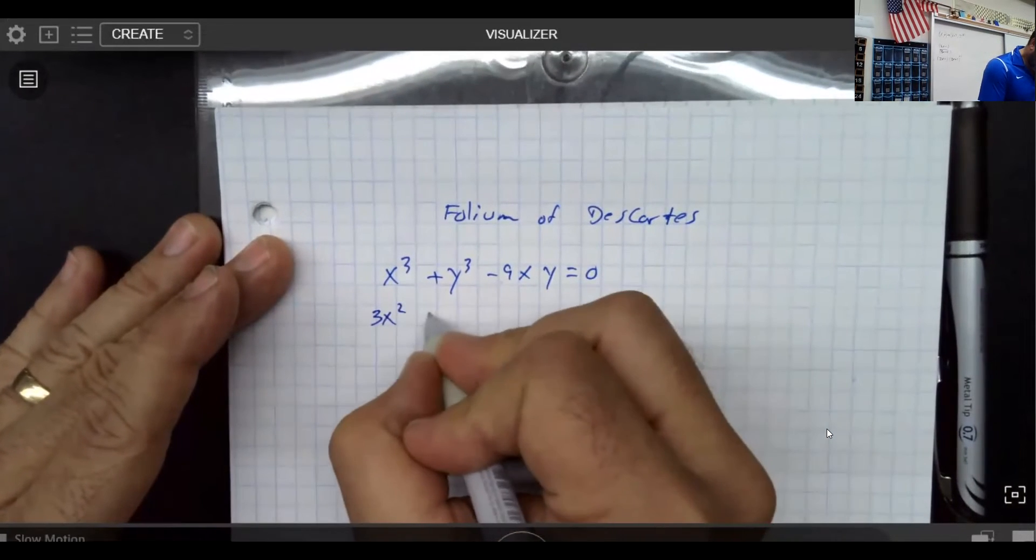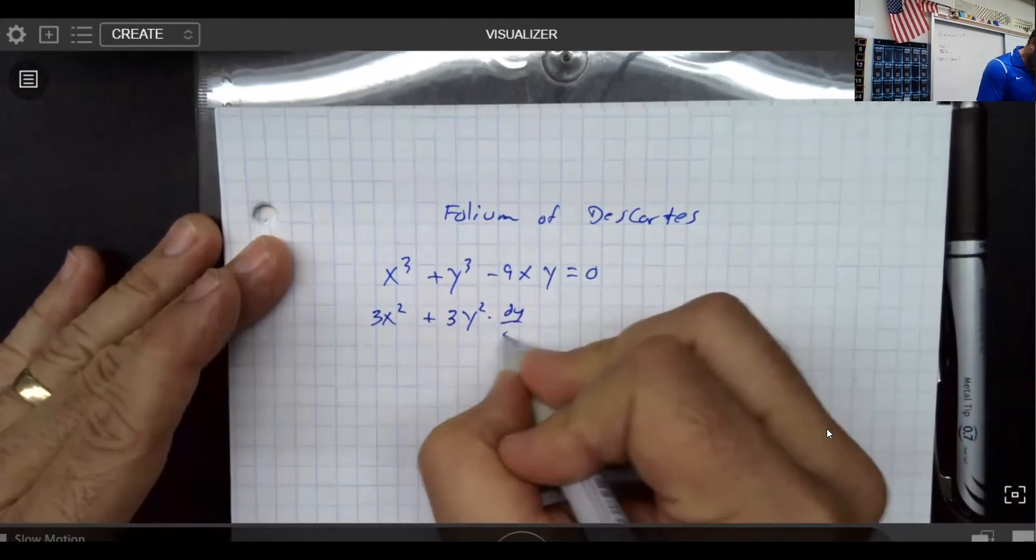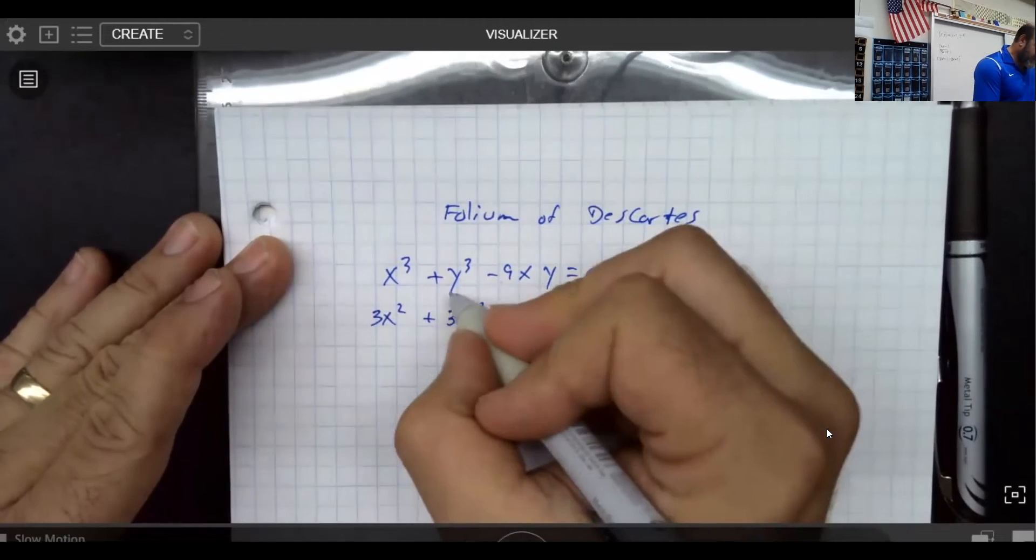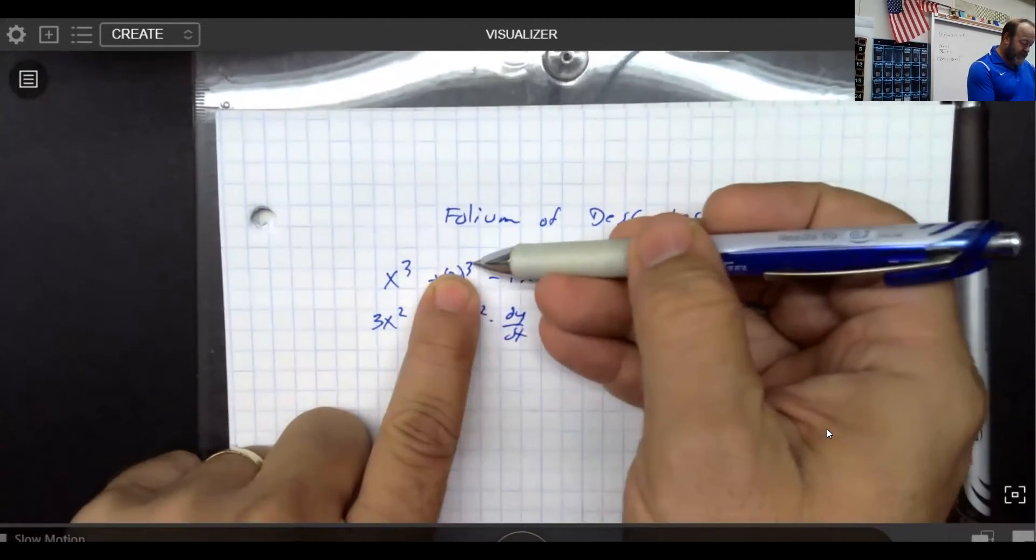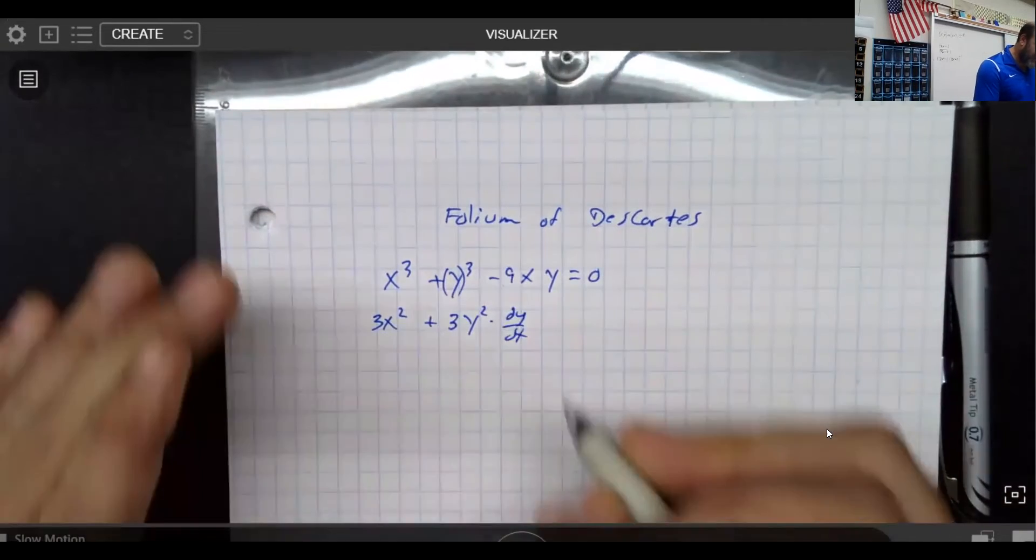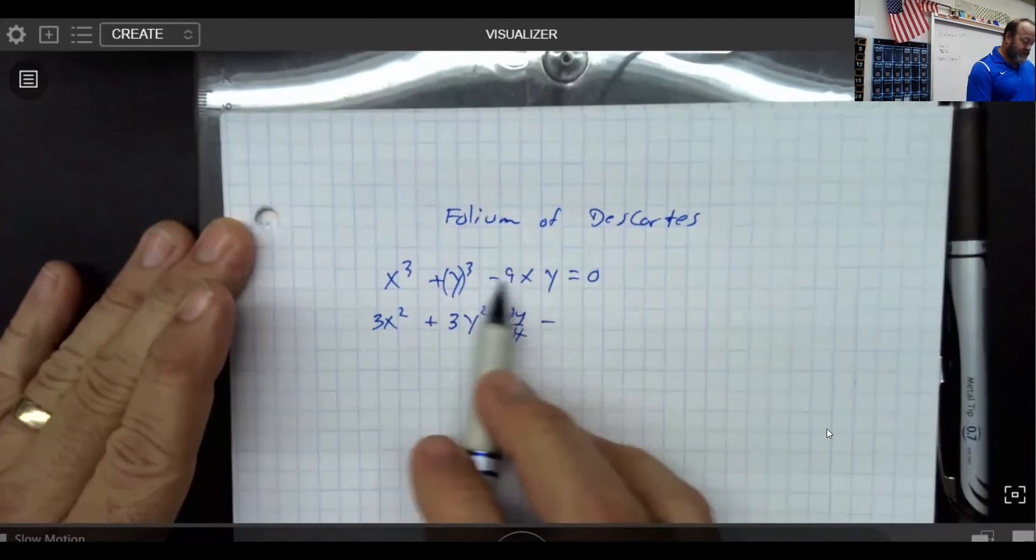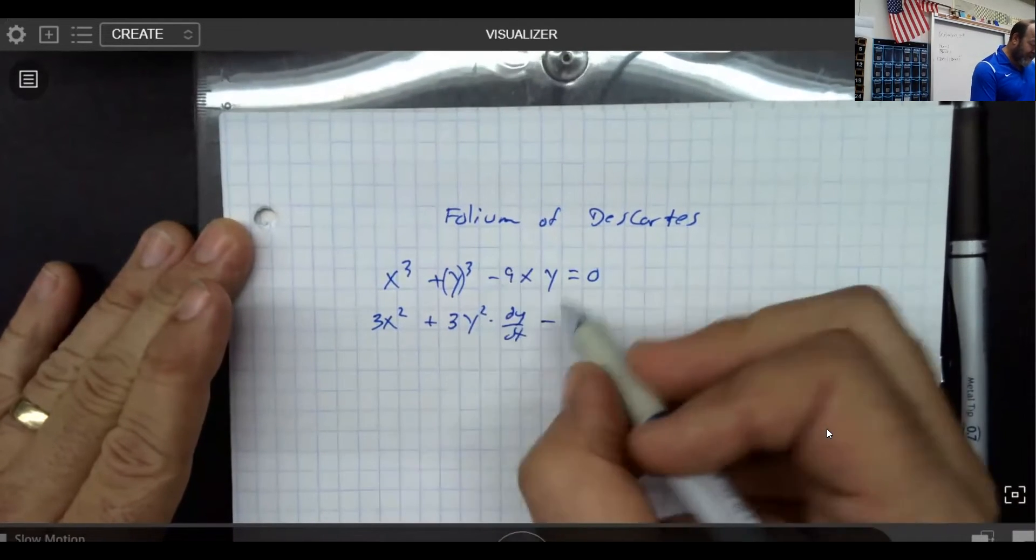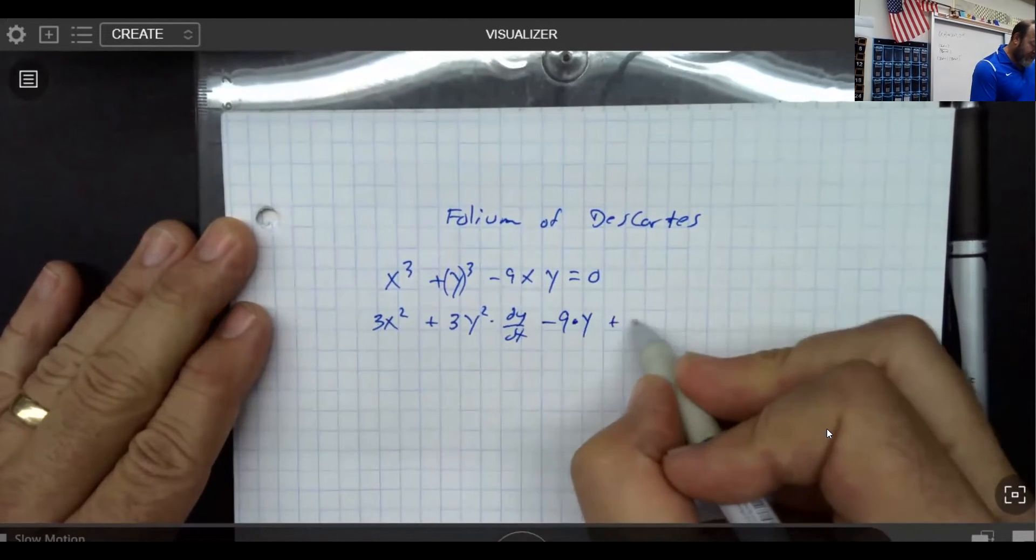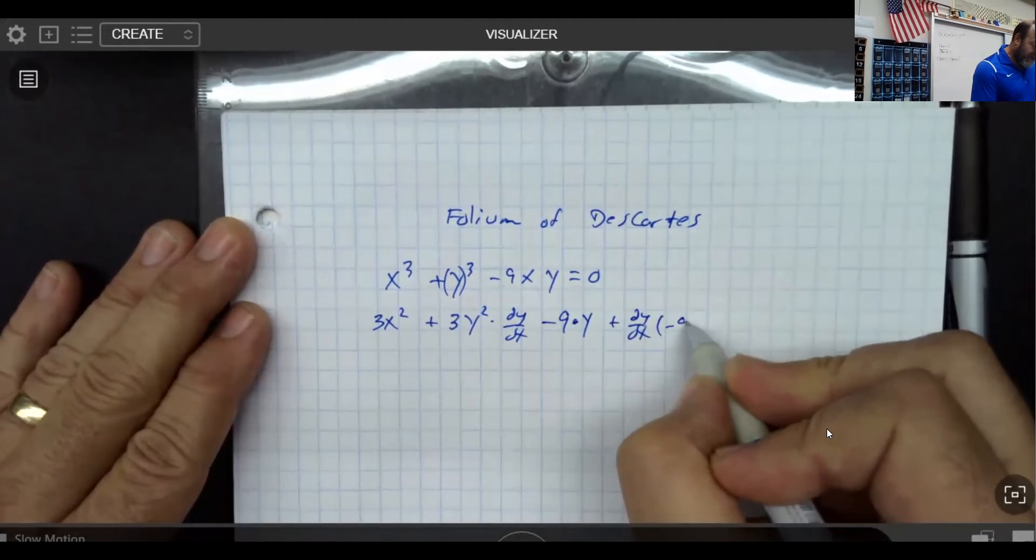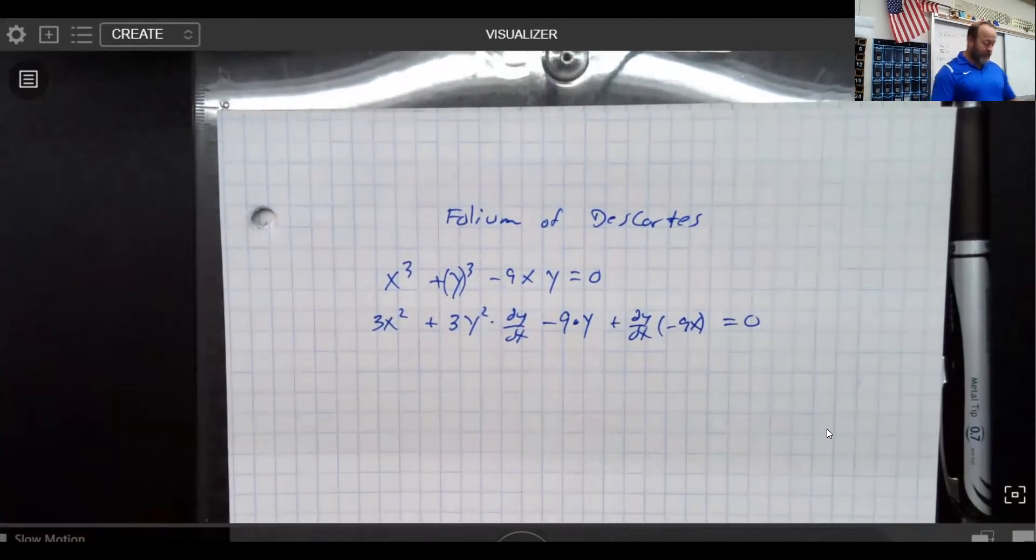We've got 3x². We've got 3y² times dy/dx. That was pretty simple. Remember chain rule. We take the derivative of 3y³, 3 times ugly to the second, and then multiply by the derivative of the inside. Right here, we have a little product rule. So if we consider this the first, the derivative of f would be negative 9. The derivative of the second would be dy/dx times the first, which is -9x. And of course, the derivative of zero is zero. No big. Okay.